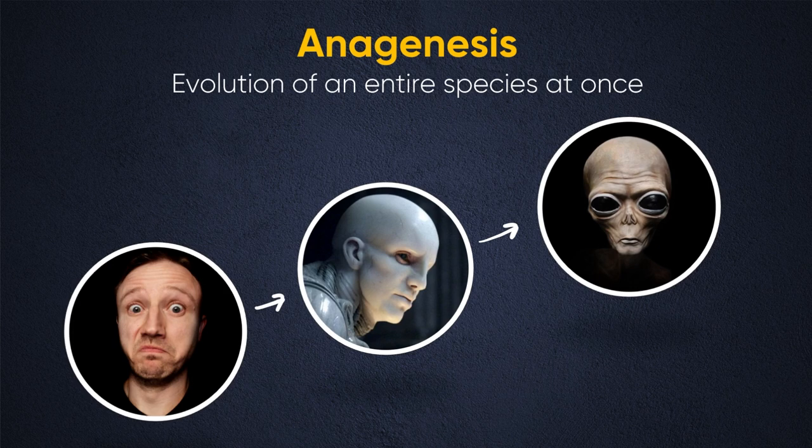If we think about this in terms of the future of human evolution, this might be what anagenesis would look like. All humans evolve into this pasty-looking alien in the middle, and then that whole population eventually evolves into the little guy with the big head and the huge eyes. So this would be anagenesis.